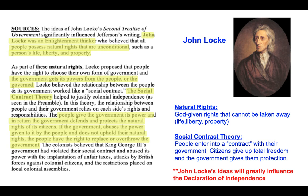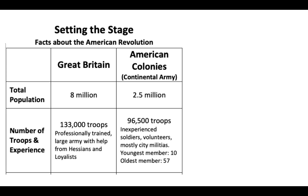That is it for slide 42. We have one more slide today — slide 43 — setting the stage with some facts about the American Revolution. Looking at the chart comparing Great Britain and the American colonies: the total population of Great Britain is roughly eight million while the American colonies had about 2.5 million — almost three and a half to four times more people in Great Britain.